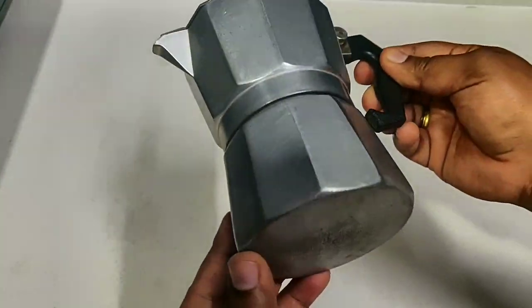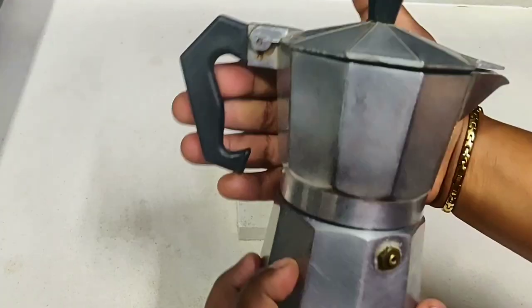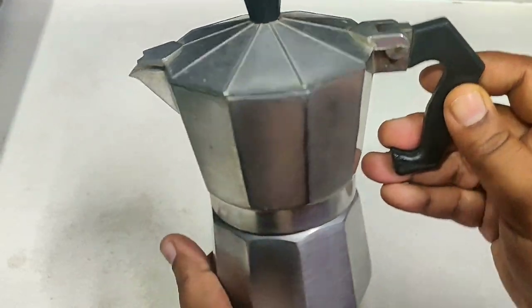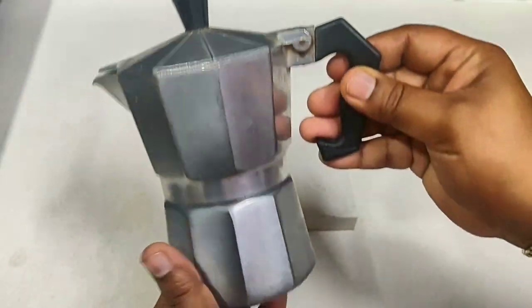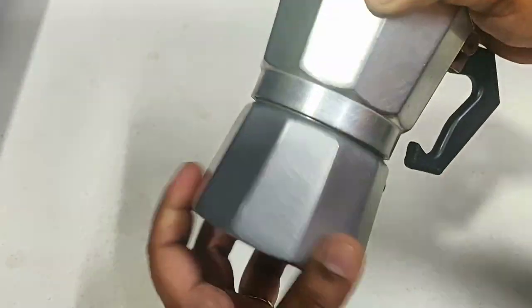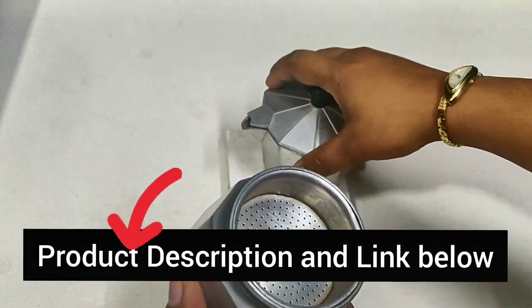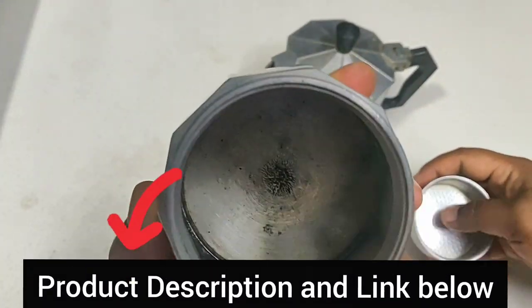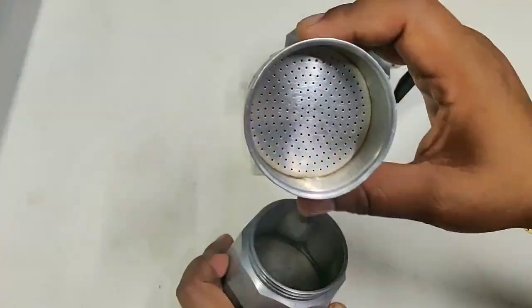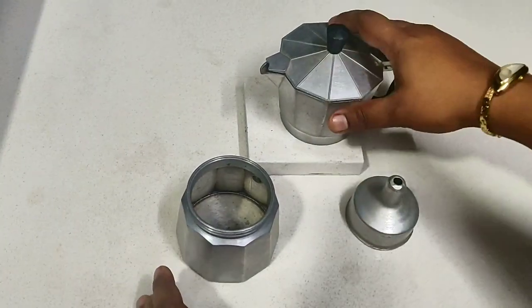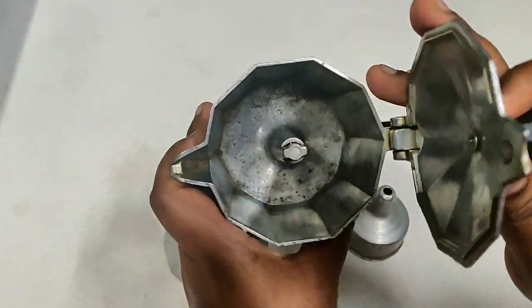Here I'm using this espresso maker or coffee percolator. This is made of aluminum and it has three parts: the bottom part is the water container, this middle part is a filter which looks like a funnel, and the top part is where the decoction is collected.